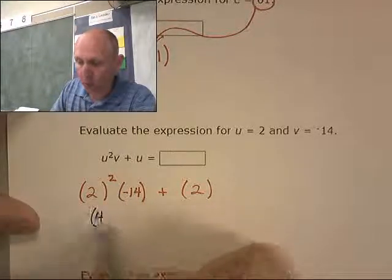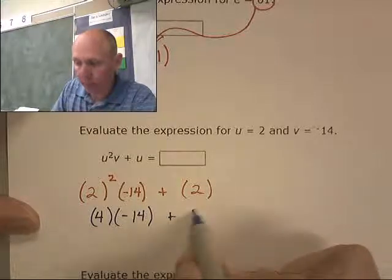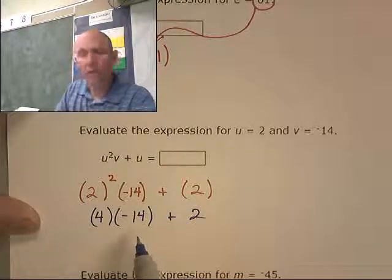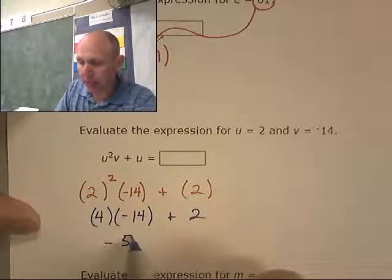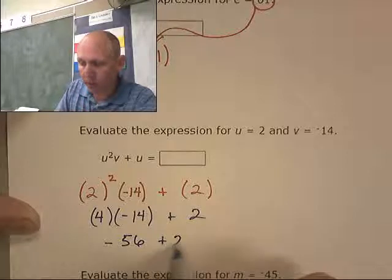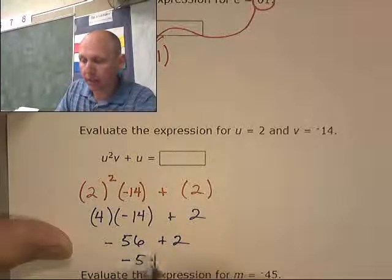And now I will evaluate the expression using correct order of operations. Handle that exponent. That's a 4 times negative 14 plus 2. 4 times negative 14 is negative 56 plus 2. That's going to take me. I have more negatives, so it's negative 54. Negative 54.